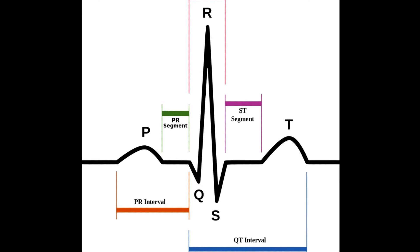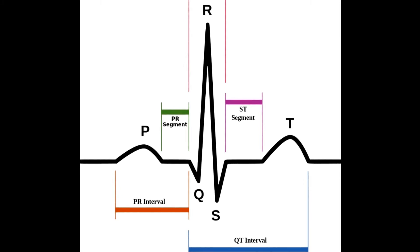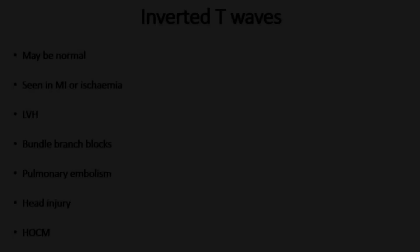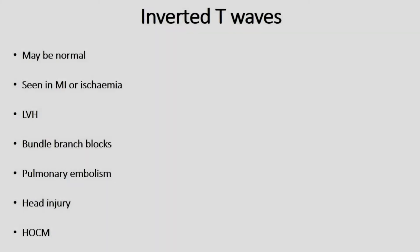Often on an ECG you may see inverted T waves, and it's important to note that these can be a normal finding in certain patients. Inverted T waves however may represent other more serious conditions — for example, you see inverted T waves in a patient having a heart attack or myocardial ischemia.